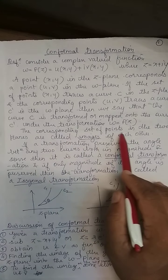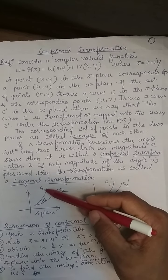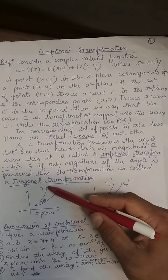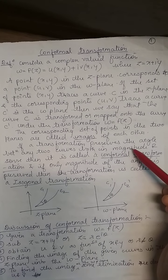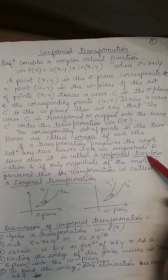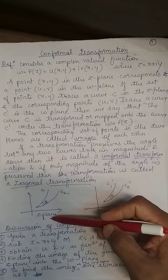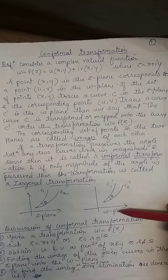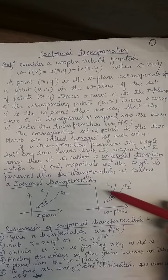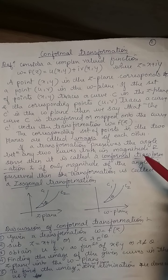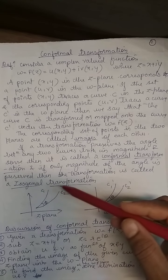The corresponding set of points in the two planes are called images of each other — C is the image of C' and C' is the image of C. If a transformation preserves the angle between any two curves both in magnitude and sense, it is called a conformal transformation. If only magnitude is maintained but not sense, it is called an isogonal transformation.